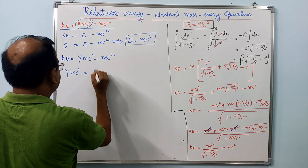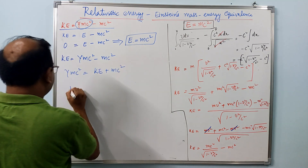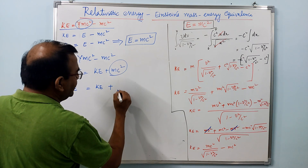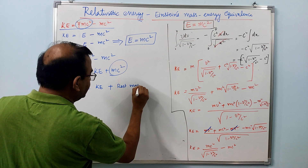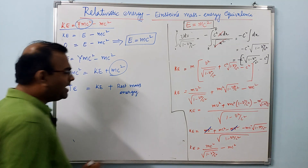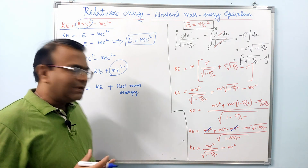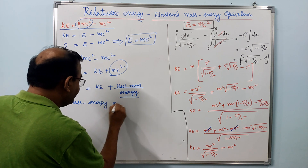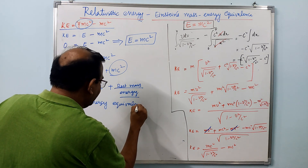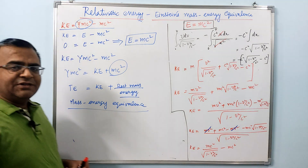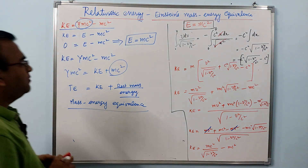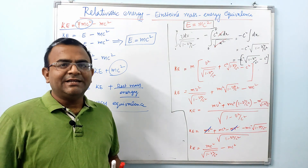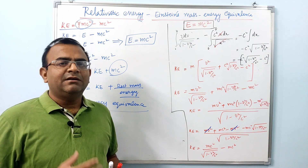If the kinetic energy of the object is zero, then E minus mc² equals zero, giving us E = mc². This is the very famous equation attributed to Albert Einstein in relativity. Therefore, γmc² equals KE plus mc² — the total energy equals kinetic energy plus rest mass energy, which is the energy associated with any object that has a mass. This is what we mean by mass-energy equivalence in special relativity.